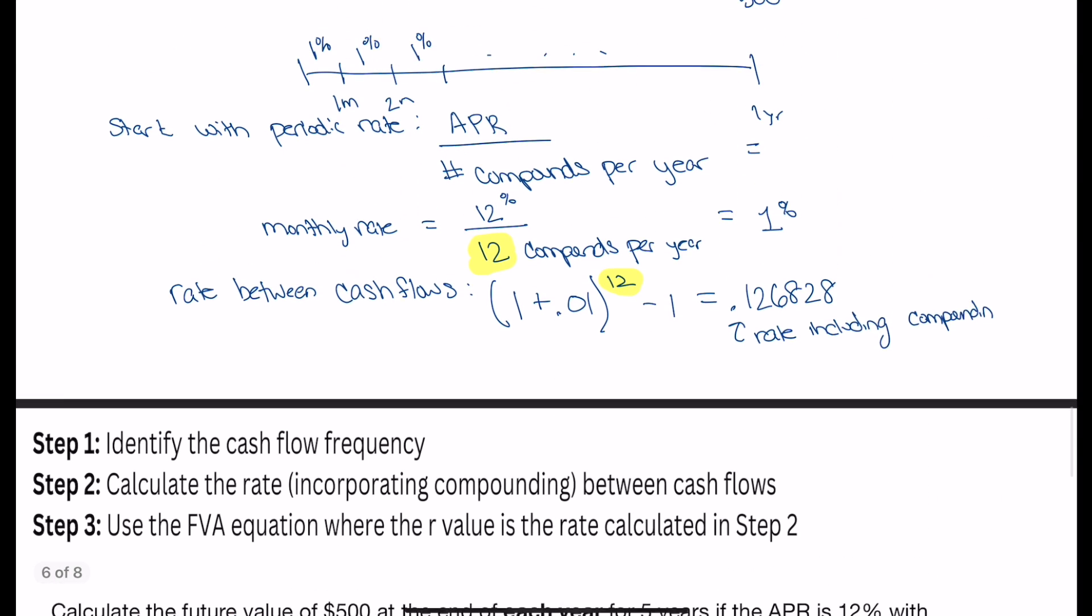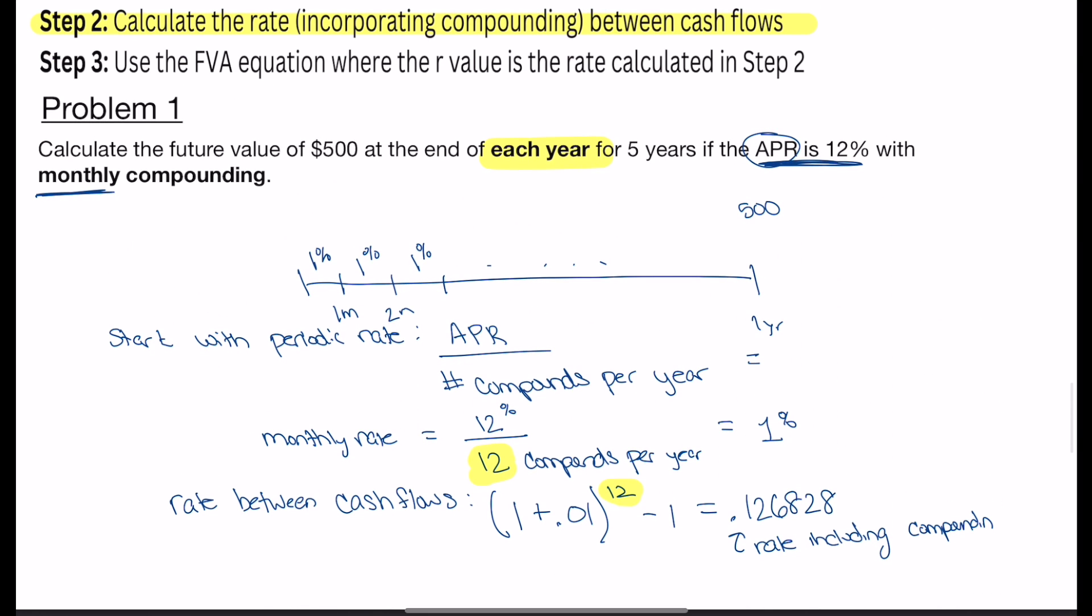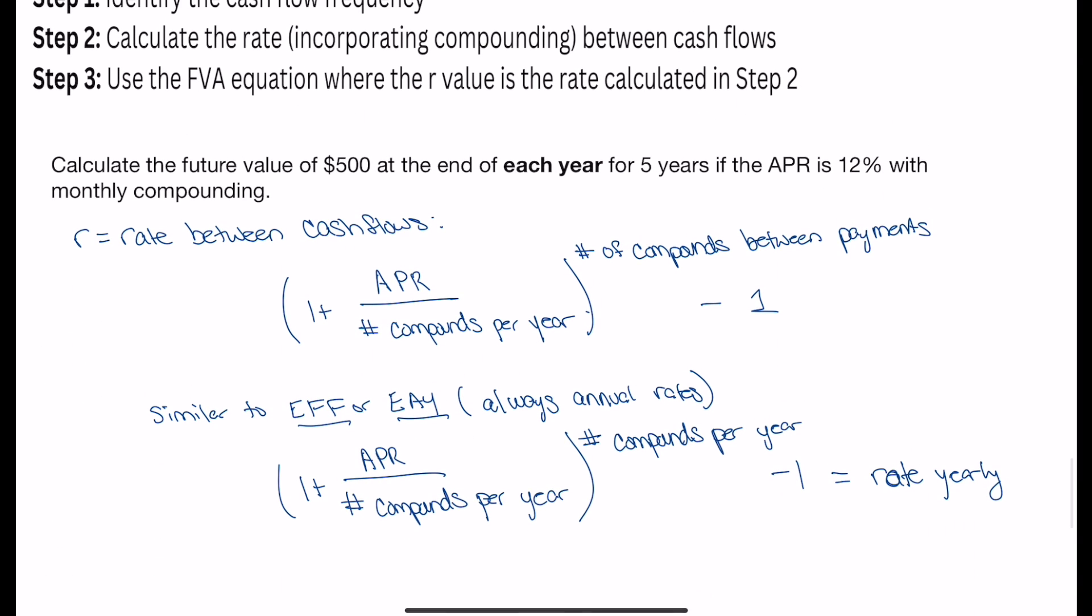Now that actually ended up being exactly what we were calculating for this example problem, right? We were taking a monthly rate and compounding it for 12 months in one year. So this rate that we solved for, the 12.68%, is an annual rate that includes compounding. Now where you can no longer use this is you cannot use this if the cash flows are not annual.